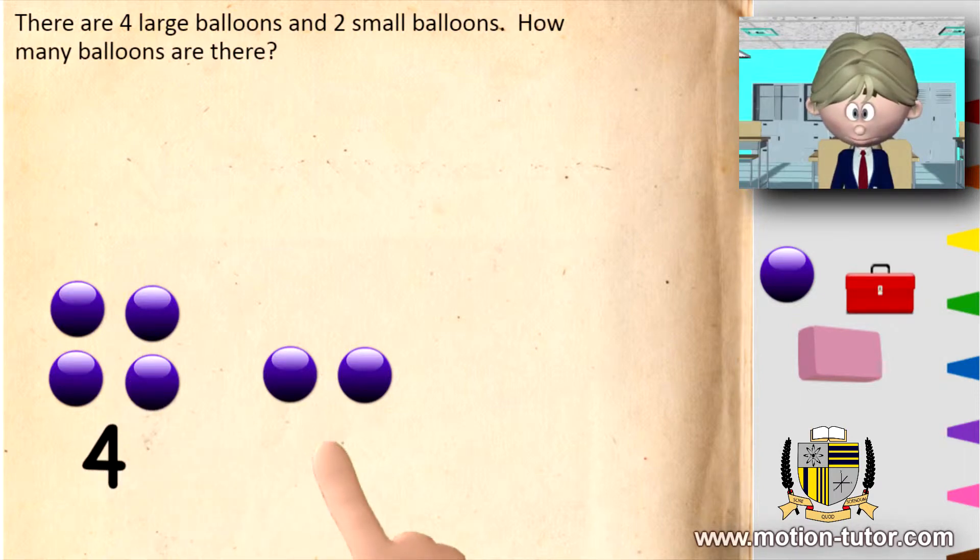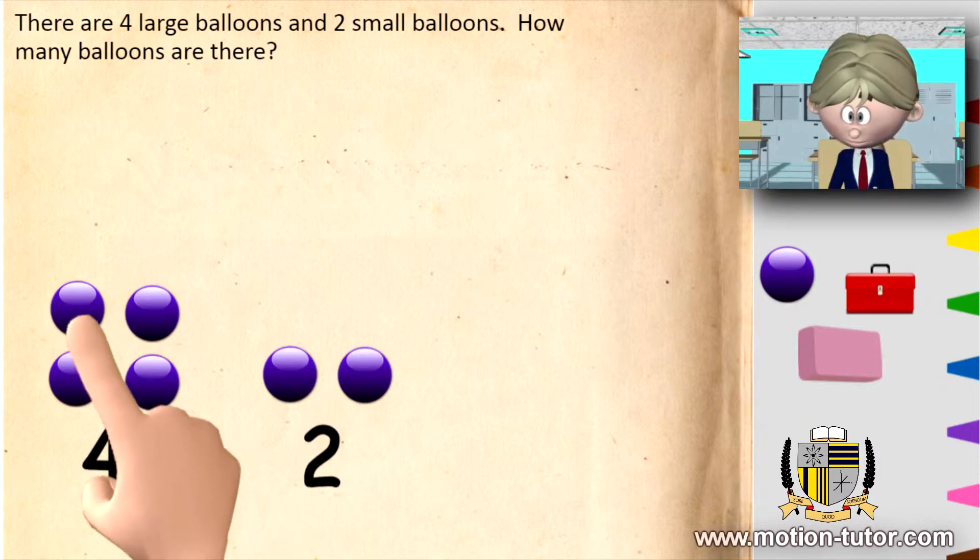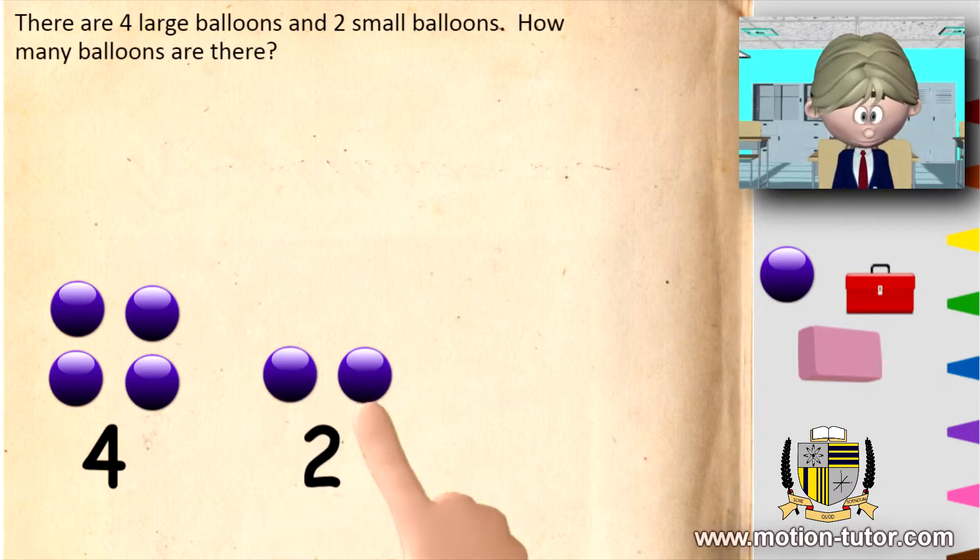Four, two, and how many all together? How many balloons are there? One, two, three, four, five, six. So all together, there's six.